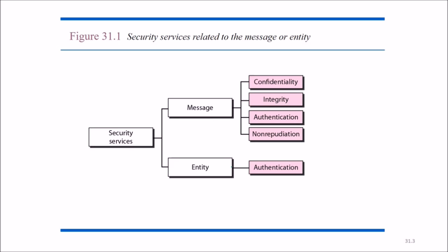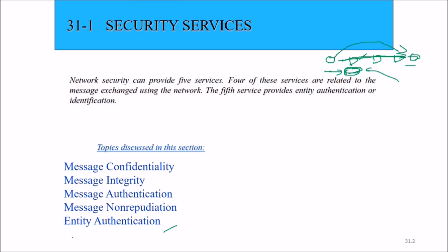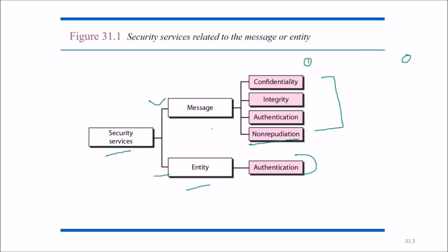The security services include message confidentiality, integrity, authentication, non-repudiation, and entity authentication. These services are related to either a message or an entity. One service is to find out or authenticate the entity or person. There is a difference between message authentication and entity authentication, which we will see now.